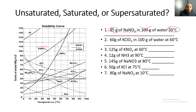We circle 30 degrees Celsius. Now we locate NaNO₃ on our solubility curve and plot our point at 45 grams and 30 degrees Celsius. If you notice, the NaNO₃ line is above this point, so since the point is below the line, this is an unsaturated solution.